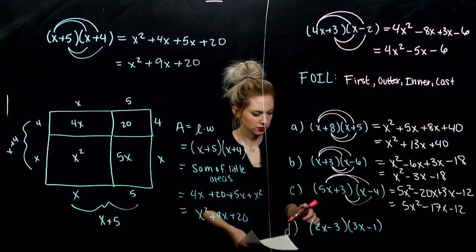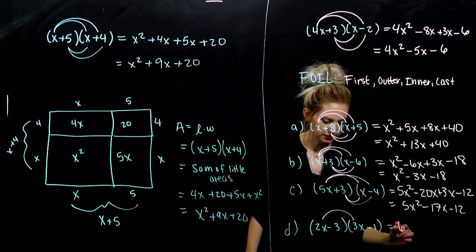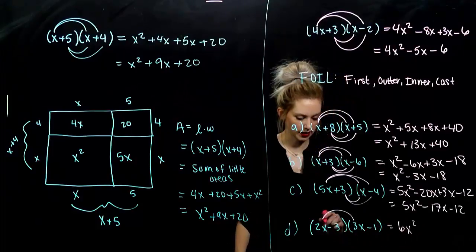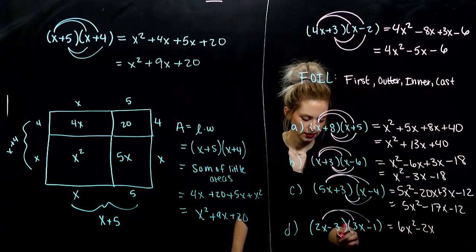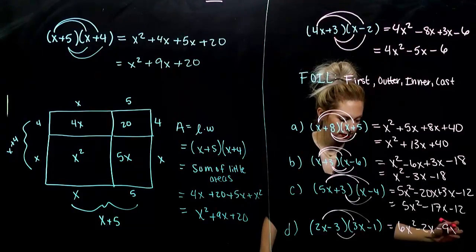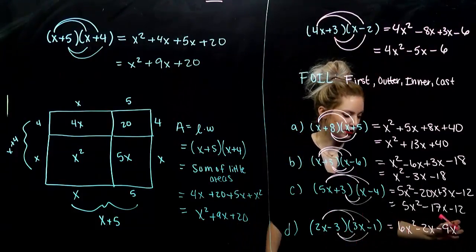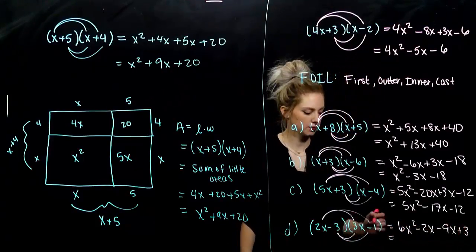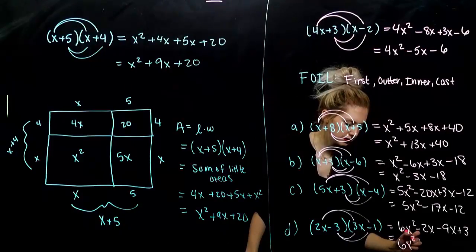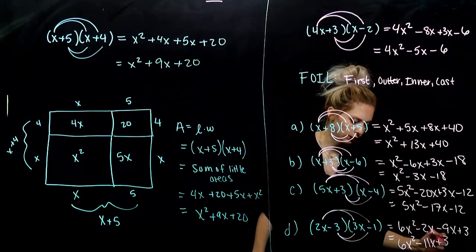And, the very last one. So, our first, 2 times 3, give me 6, x times x is x squared. Outer, minus 2x. Inner, minus 9x. And, last, negative times a negative gives positive 3. We want to combine our like terms. Write it in descending order. So, I've got minus 11x, plus 3.